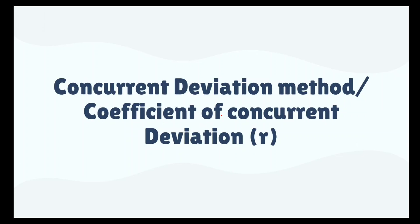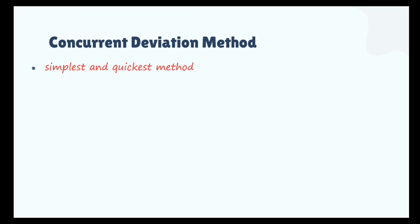We are working on correlation and to find out the coefficient of correlation, there is one method known as the concurrent deviation method. This method is one of the simplest and quickest methods. Simplest in the sense that the calculation is simple and so fast that you can get the answer very quickly. But as we know, with some advantages, we get disadvantages along with. Since it is quickest, in statistics, no quickest method is considered to be perfect.